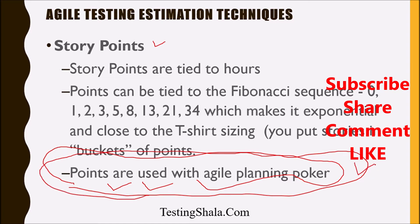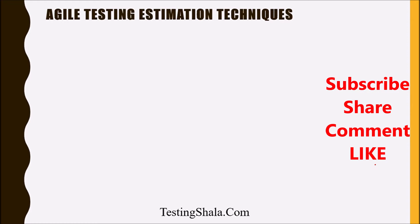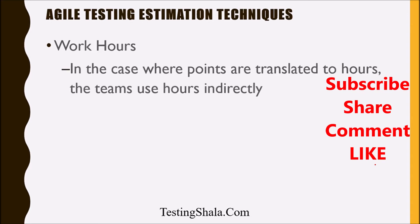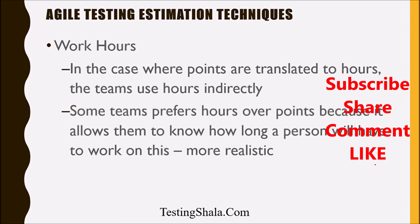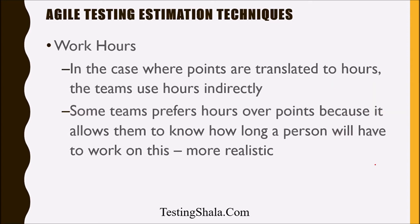The third agile test estimation technique is work hours. Here we go with gut feeling and estimate everything in terms of work hours. Points are translated directly to hours. Some teams prefer hours over points because it allows them to know how long a person will have to work on a task in a more realistic way, making estimation straightforward.